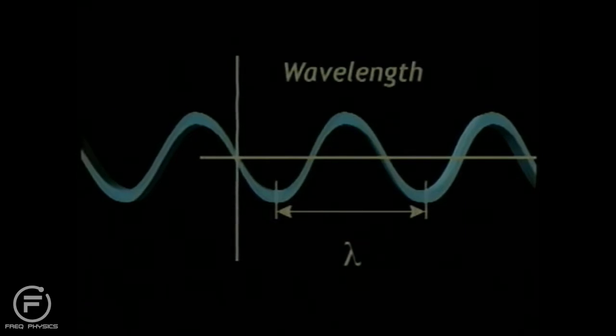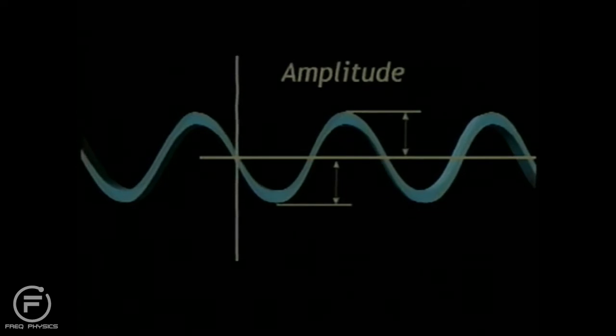Another parameter of a wave is its amplitude. The amplitude determines the strength of the wave. Greater disturbances at the source lead to greater strengths during propagation. For sound waves, a higher amplitude equates to a higher volume.